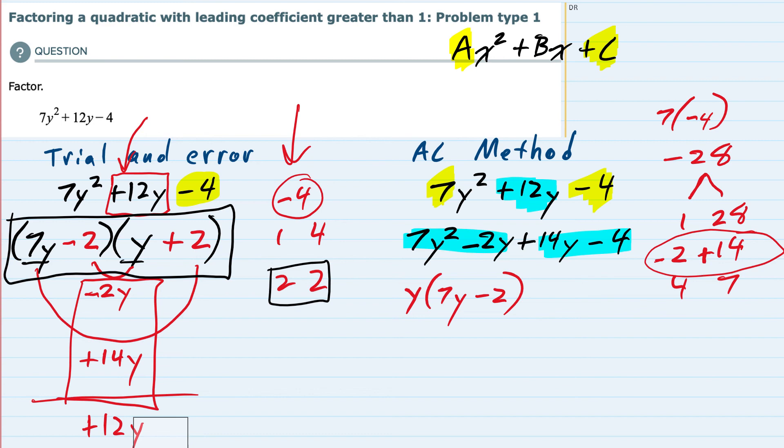And then in those last two terms, 14y - 4, I could factor out a 2 from that. So I'm going to factor out that +2. That would leave me factoring out a 2 from the 14y would give me 7y. And factoring out the 2 from the -4 dividing by 2 would give me a -2.